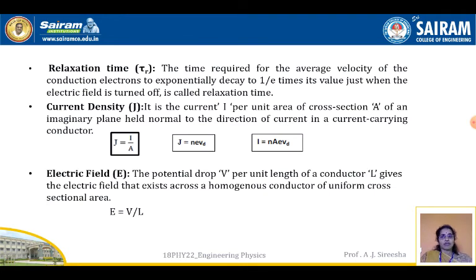Relaxation time tau_r is the time required for the average velocity of the conduction electrons to exponentially decay to 1/e times its value just when the electric field is turned off. Current density j is the current i per unit area of cross-section A of an imaginary plane held normal to the direction of current in a current-carrying conductor. Therefore, j = i/A = neVd.